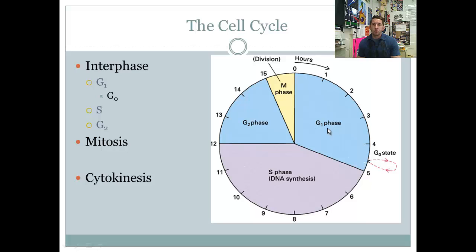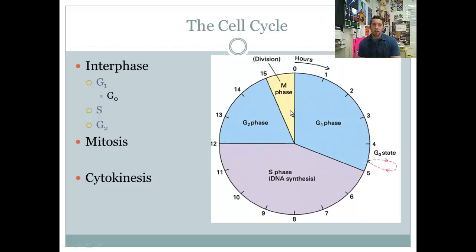G1 is 'gap 1' and G2 is 'gap 2' — I also think of them as 'growth.' As organelles and DNA are being duplicated, the cell obviously has to grow. So it's growing and duplicating in interphase, then we move into mitosis, and finally cytokinesis.